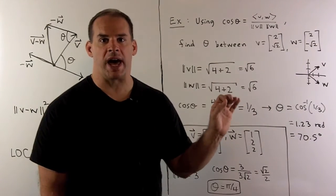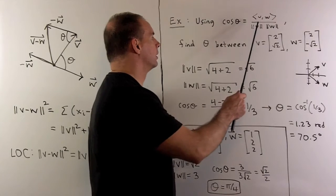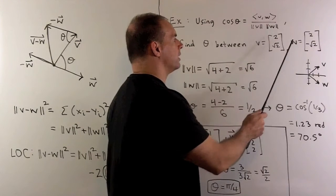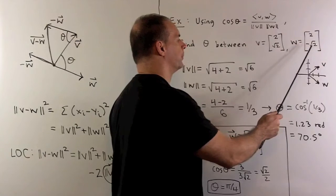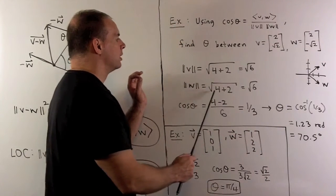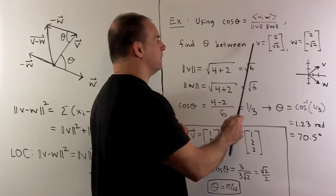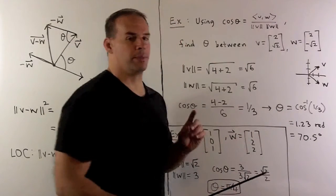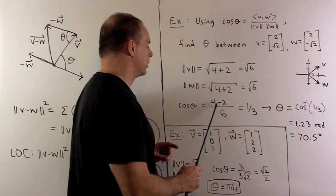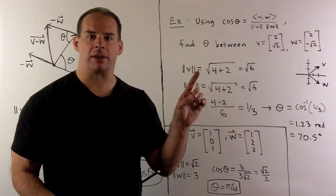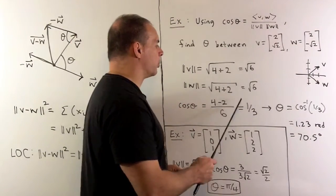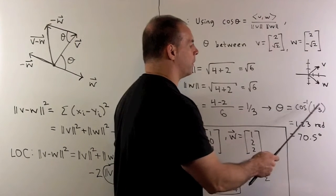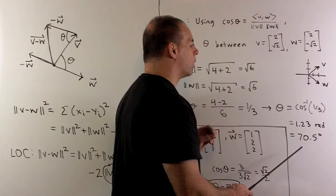Let's find the angle between two vectors in R2: v equals (2, √2) and w equals (2, −√2). The lengths are each equal to √6. The dot product is 2 times 2 plus √2 times (−√2), giving 4 minus 2, so the dot product is 2. Dividing by the product of the lengths, which is 6, gives cosine equal to one-third. Solving, theta equals the inverse cosine of one-third, which is approximately 1.23 radians or 70.5 degrees.